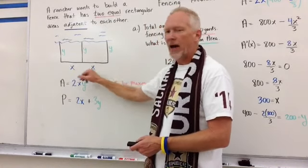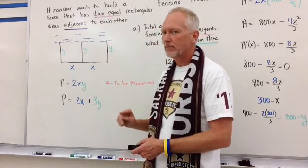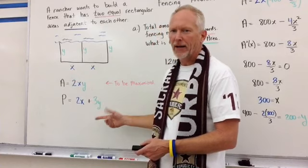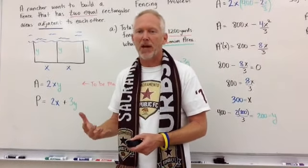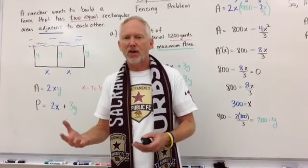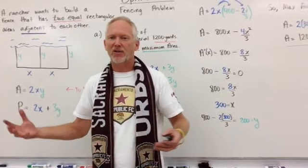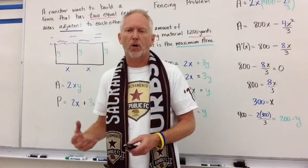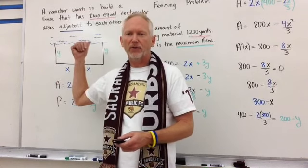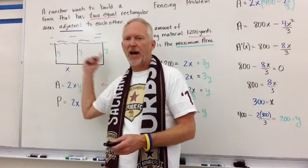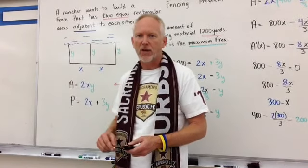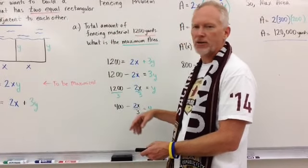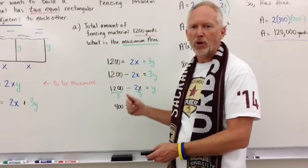Area is still 2x times y. The perimeter changes — perimeter now is 2x plus 3y. So with the same amount of material, we should be able to increase the size because we don't have to use material for the upper side; we've got the river to do that for us. The total amount of fencing material is 1,200 yards, and the maximum area is what we're looking for.